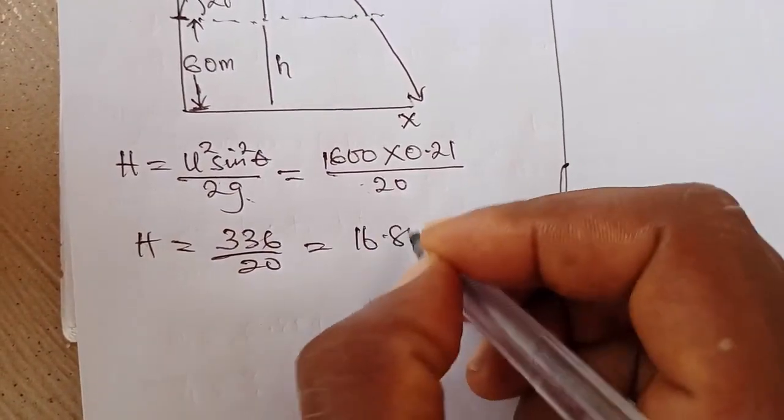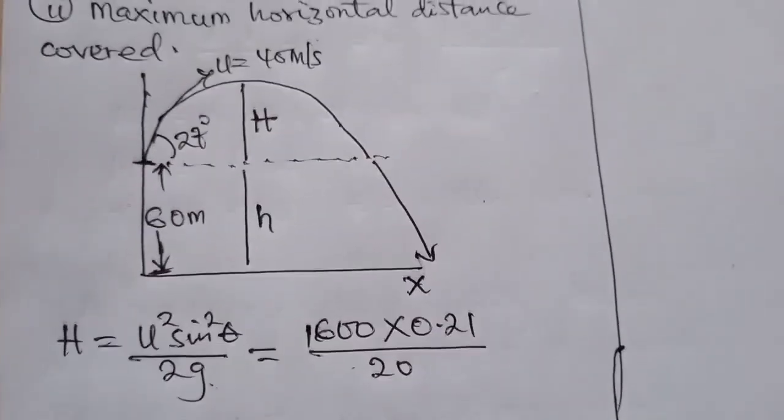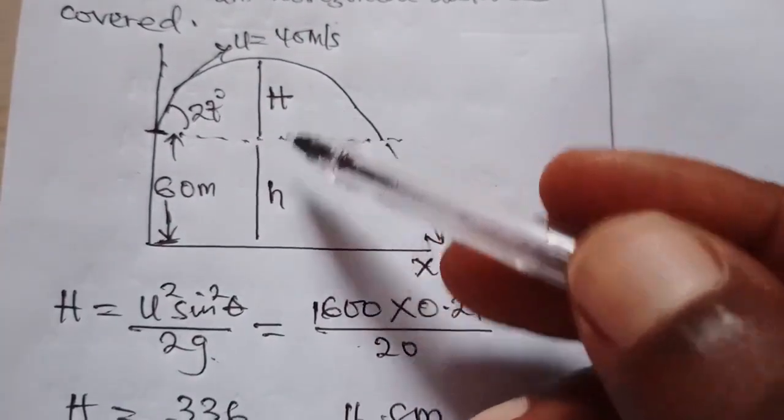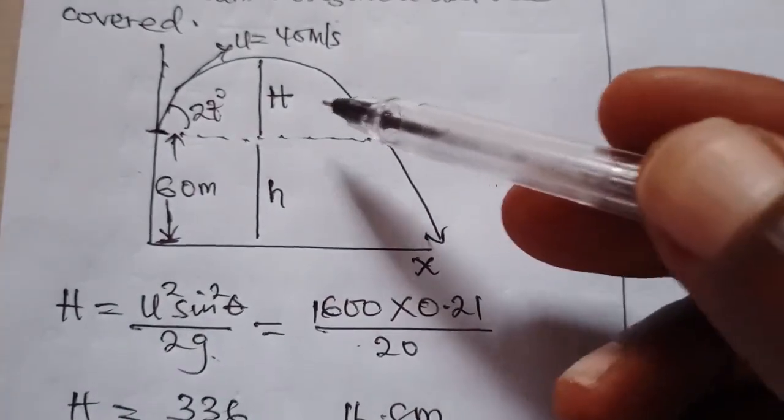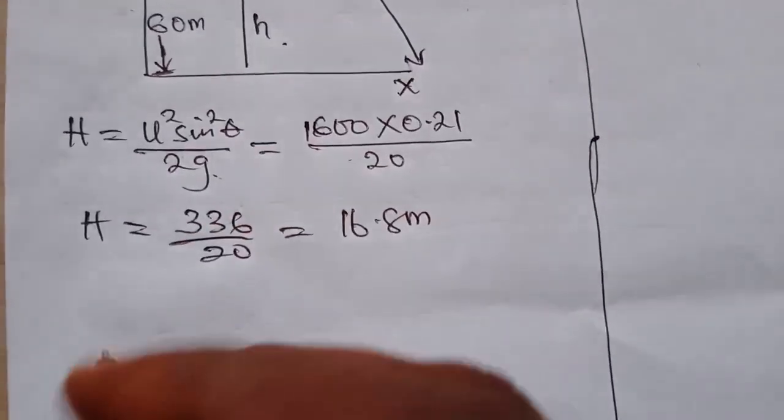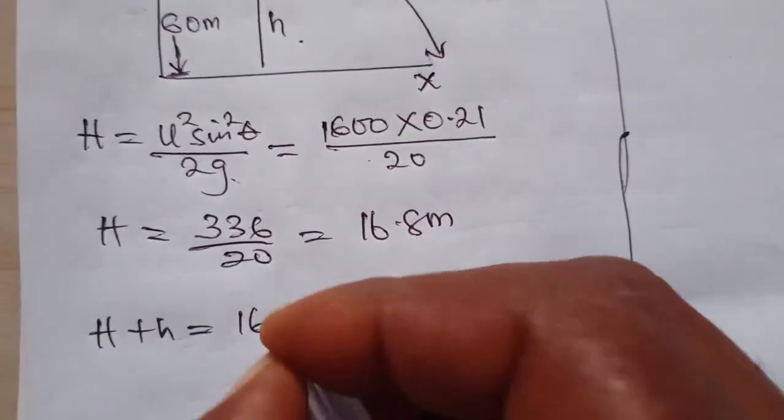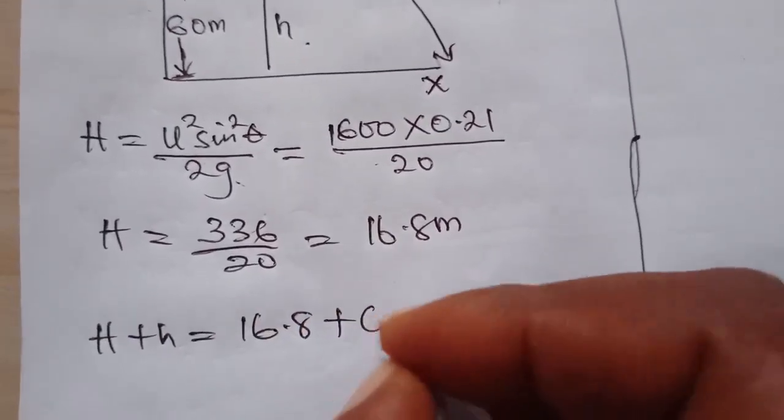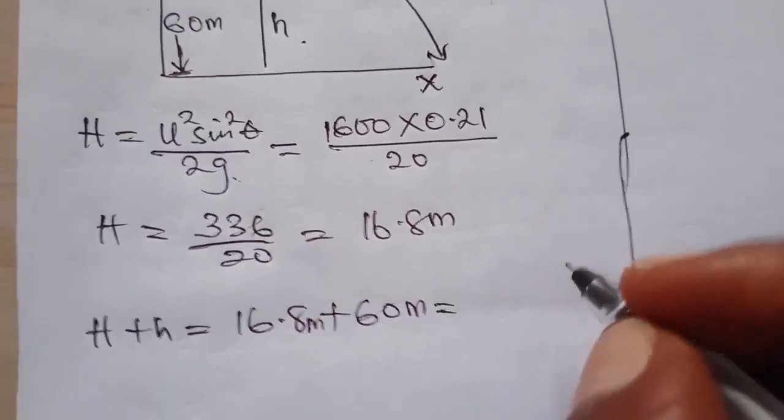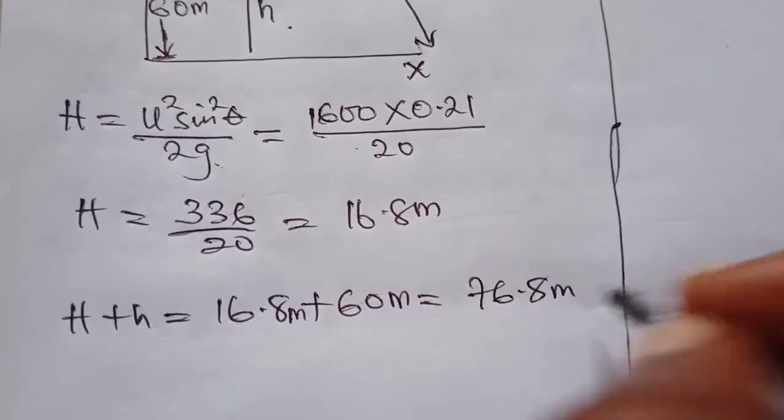So what this means is that the total height is now 16.8 plus 60 meters. And if we combine that, we're going to have about 76.8 meters.